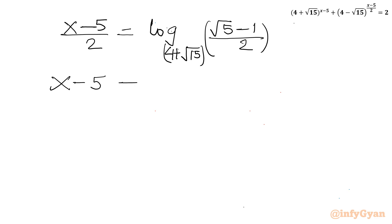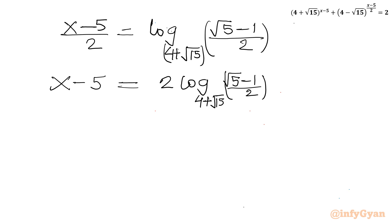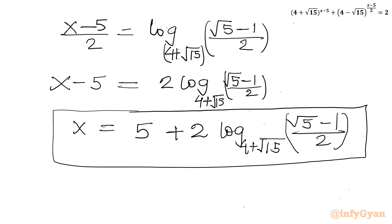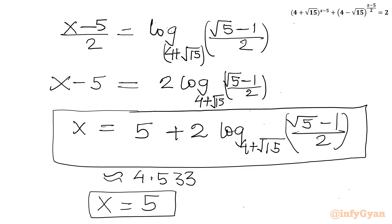So x = 5 + 2·log base (4 + √15) of ((√5 − 1)/2). Checking the approximate value, this is approximately 4.53. So we have two real solutions: x = 5 and x ≈ 4.53. This brings the end of the video. Do not forget to like, share and subscribe. Bye-bye till next video. Good luck, take care of yourself. Goodbye.